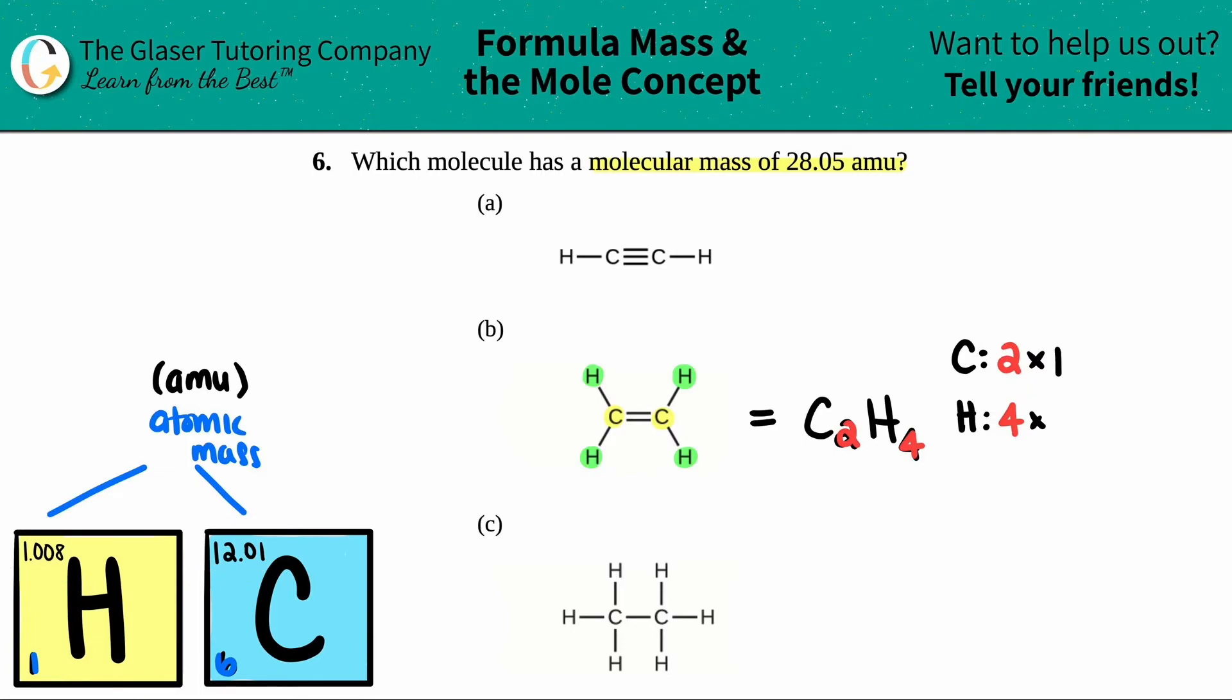So going back to here, I'm just going to multiply the mass of each individual element by how many I have. So for carbon it's going to be 2 times the 12.01 amu, and for the hydrogen it's going to be 4 times the 1.008 amu.